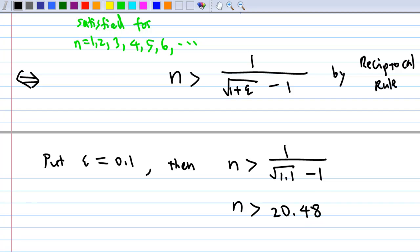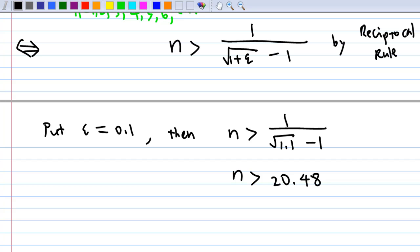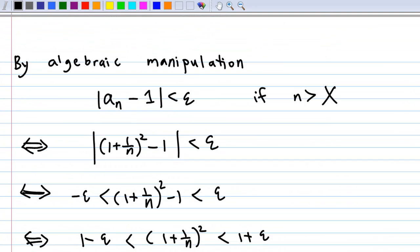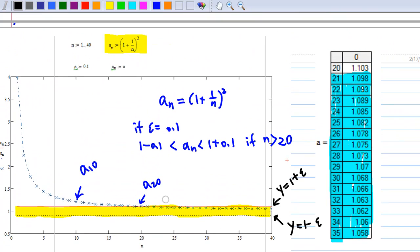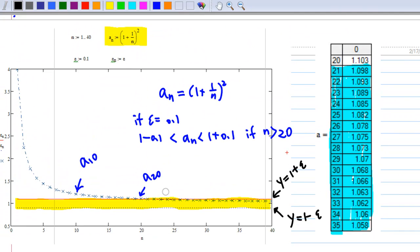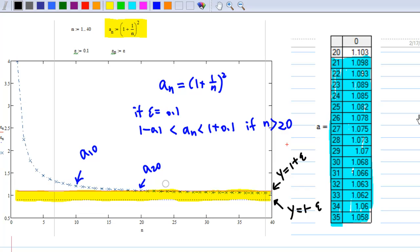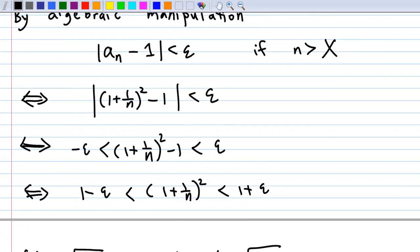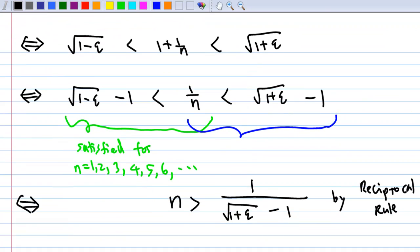So n = 21, 22, 23, 24, and it agrees with the observation we made from the sequence diagram. From the sequence diagram, we observed that a_n will fall inside the yellow band between 1.1 and 0.9 if n > 20. And we get the same result by algebraic manipulation.